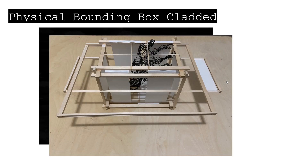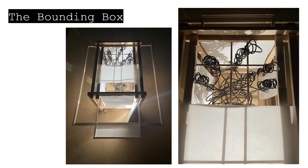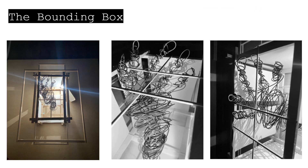I then went on to create the physical box, add the cladding, insert the wire hand, and add a source of light in order to take pictures of it. The first four pictures were meant to show the overall look of the hand and the box itself. After this, I decided to make the pictures black and white in order to highlight what I thought was most important — the wire hand and its placement.